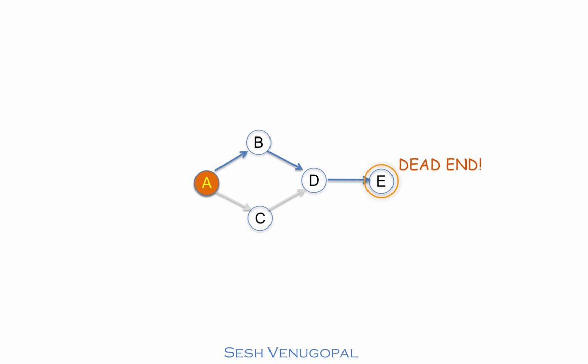Now we're at a dead end. So we will need to backtrack and find other paths to take in the graph, if there are any. Before we do that, notice that starting at A, we went as deep down the graph as we could along some path before coming to a dead end. This is the characteristic feature of depth-first search.